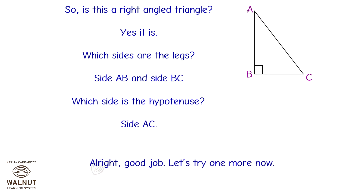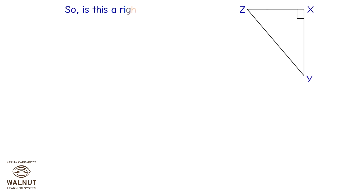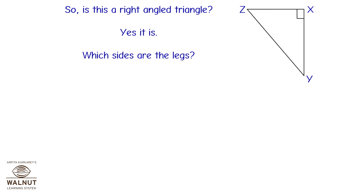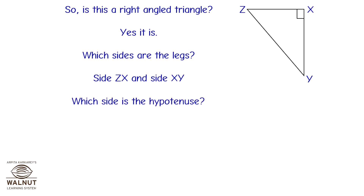Alright, good job. Let's try one more now. Is this a right-angled triangle? Yes, it is. Which sides are the legs? Side ZX and side XY. Which side is the hypotenuse? Side ZY.